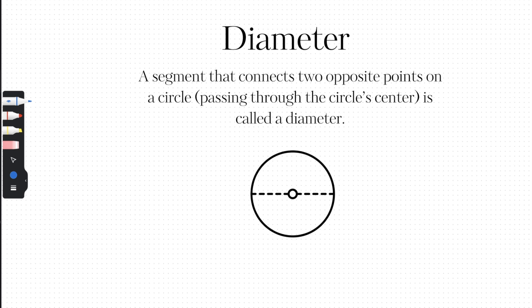The diameter is a segment that connects two opposite points on a circle passing through the center. Here we have a circle and notice how this line goes right through the center — that's the diameter. One thing to remember is that two radii equal the diameter. Here's a radius and here's another radius, so twice the radius equals the diameter.